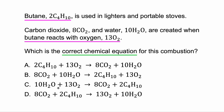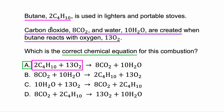Given the answer choices, only the first one has that correct — so automatically A. We know butane and oxygen react and combine together; they belong on the left side. Let's verify: carbon dioxide (8CO2) goes on the right side, and water (10H2O) because those things are created — same as produced — at the end of the equation. So those things belong on the right side, and that's all correct.